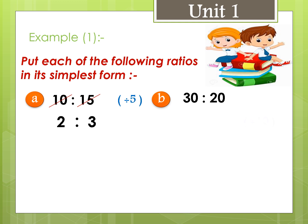Letter b: 30 to 20. Both are divisible by 10, since their units digits are 0. So 30 divided by 10 equals 3, and 20 divided by 10 equals 2. The ratio is 3 to 2.